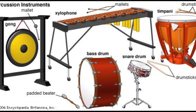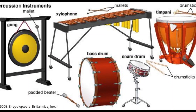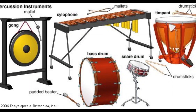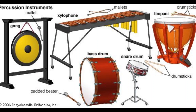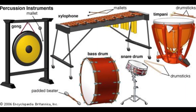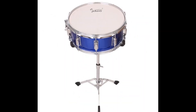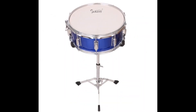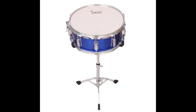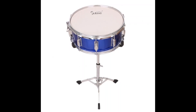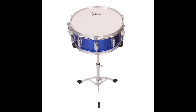The percussion family is made up of several categories of instruments which include pitched, non-pitched, and accessory instruments. Rather than using air to produce pitches through an instrument, percussionists use sticks and mallets to hit certain instruments and produce different sounds. The first instrument in the non-pitched percussion family is the snare drum. It is most often used to provide a steady rhythm for the band. Percussionists use many different stickings and rudiments to create interesting buzzes and rolls on the snare drum.